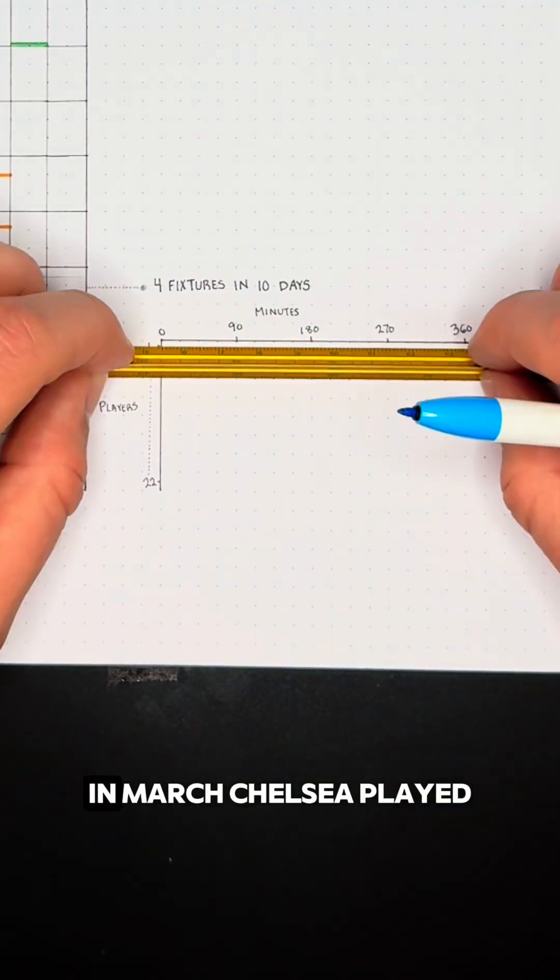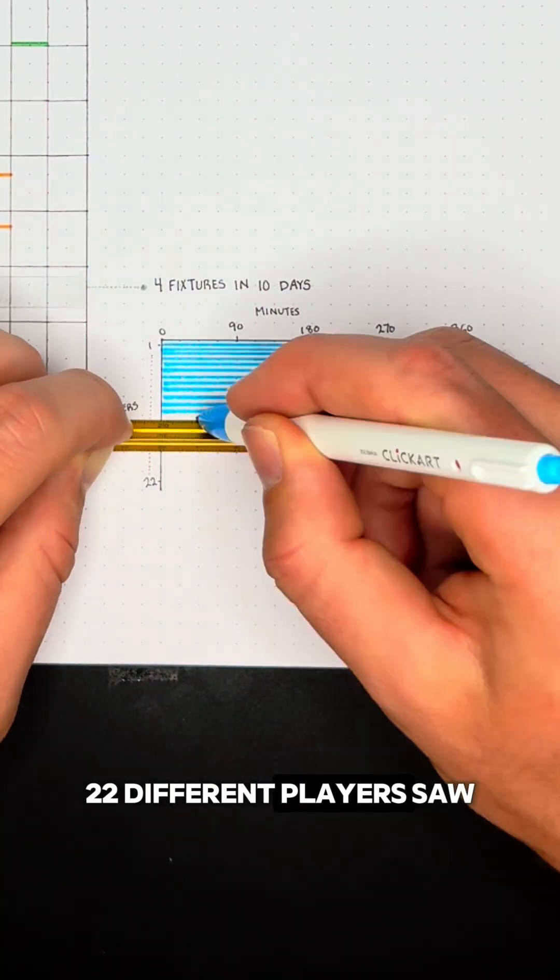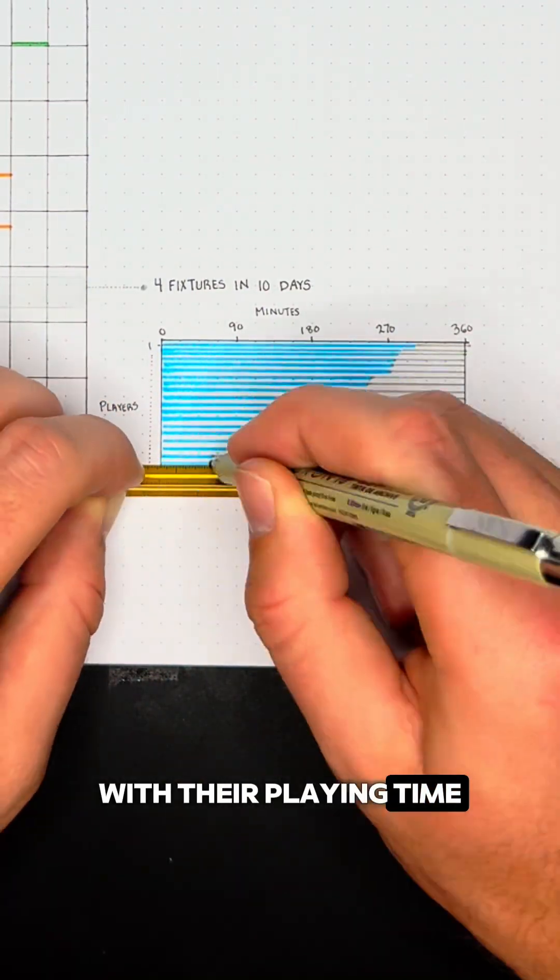Some stretches are especially brutal. In March, Chelsea played four games in just 10 days, and across that period, 22 different players saw the field, with their playing time shown here in blue.